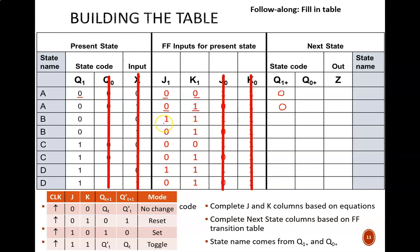The next row has both J1 and K1 equal to 1. This is toggle mode. Q1 starts low, so it will toggle high and a 1 is written here. Continuing this pattern allows us to fill in all of the cells in this column. Pause the video and try the Q0 plus column on your own. Here are my results. If you got different numbers, try to figure out why by focusing on just the sub-zero columns and referencing the characteristic table.